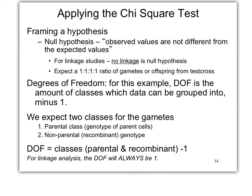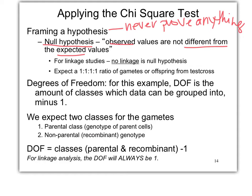To apply the chi-square test, first we frame our hypothesis. We can support a hypothesis but never prove it's true; we can disprove it. Our null hypothesis is that what we observe is not different from what we expect — meaning the genes are not linked. Not linked is always our null hypothesis, because if genes are not linked we expect a 1:1:1:1 ratio.